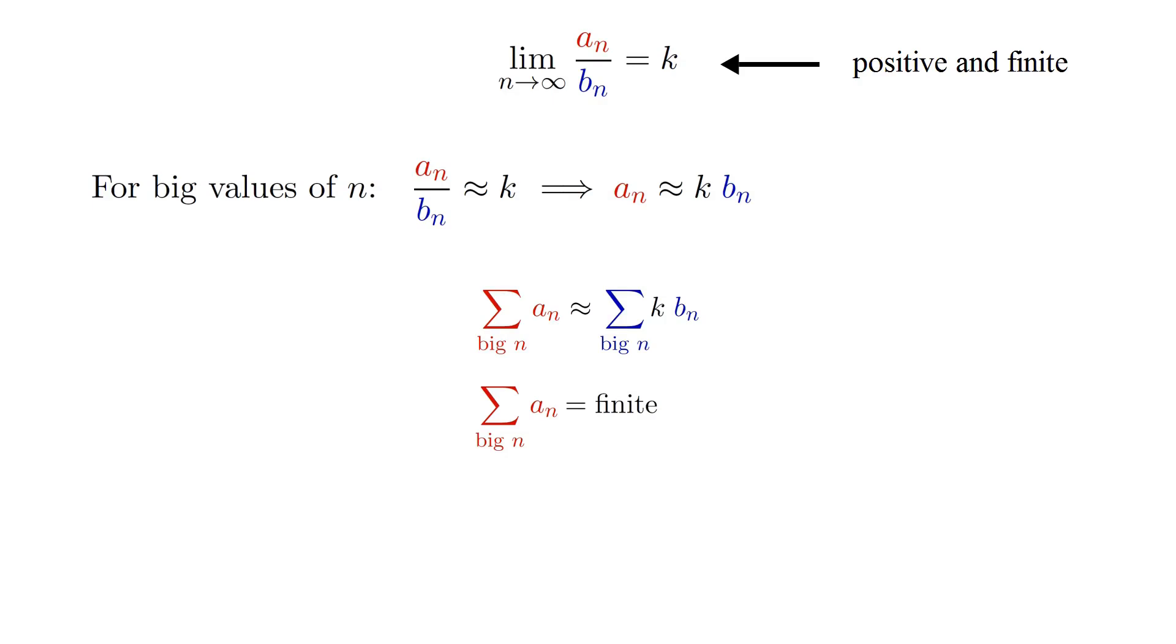Of course, this argument only works as long as we are only considering big values of n, whatever that means. But the conclusion doesn't change if we add back in the small values of n, because there can only be a finite number of terms corresponding to the small values of n. And if you add a finite number of terms to something, you can't make it switch from being finite to infinite, or vice versa.